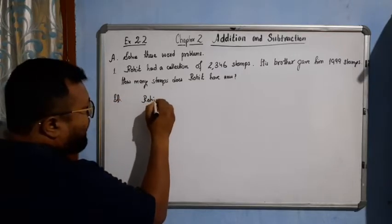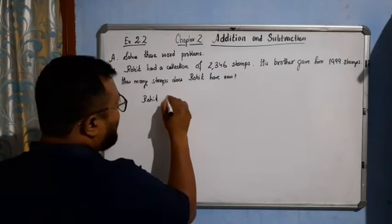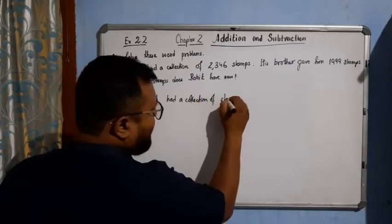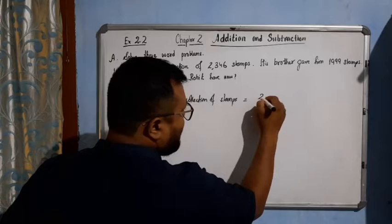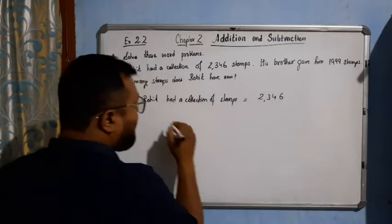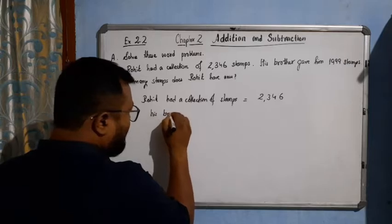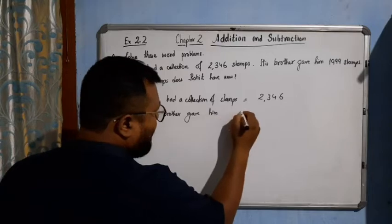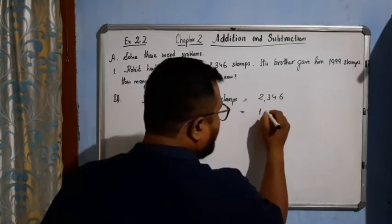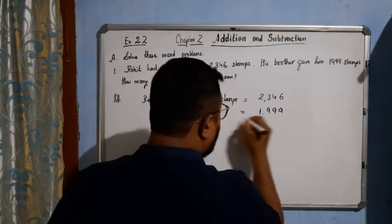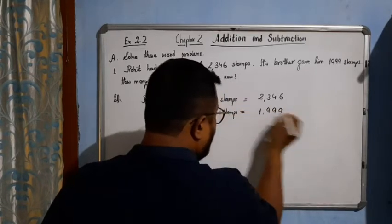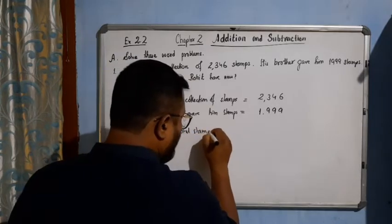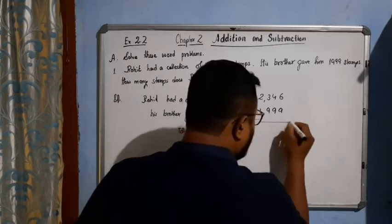Rohit had a collection of stamps equal to 2346. His brother gave him equal to 1999. This much. The total stamps equal to how much? Plus. So,